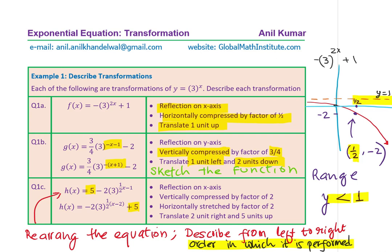So from here, we have h(x) as minus 2 times 3 to the power of (half x minus 2). We factored half out, so when you factor half out you get x minus 2, which makes clear it is 2 units to the right — that is the translation. Otherwise you could make a mistake in this particular case. These are potential errors to really look for.